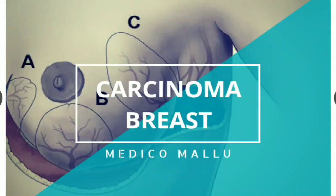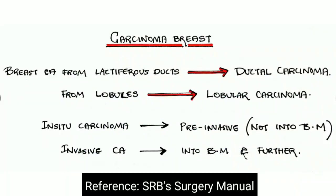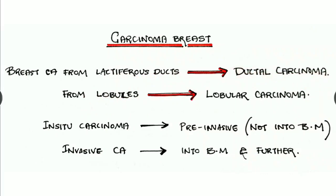Hello my dear young doctors, welcome to Medico Mallu. This time we are going to discuss carcinoma breast. Breast carcinoma can arise from two major sites: one is from the lactiferous ducts and the other from the lobules. Those from the lactiferous ducts are called ductal carcinoma, whereas those from the lobules are called lobular carcinoma.